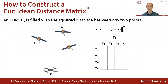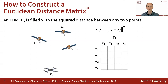Simply put, a Euclidean Distance Matrix, noted as D, is a matrix that contains the squared distances between all pairs of points in a system. In this example, we illustrate a system comprised of four points: one receiver and three satellites.